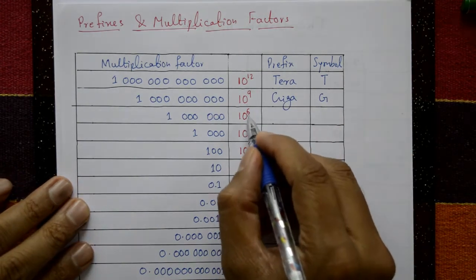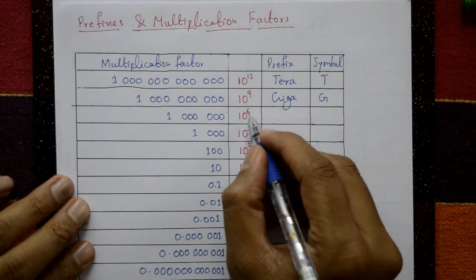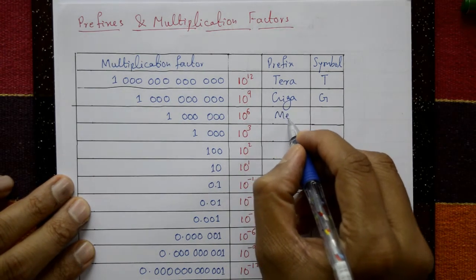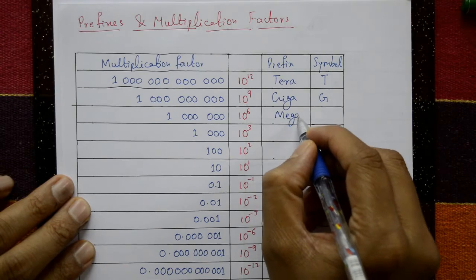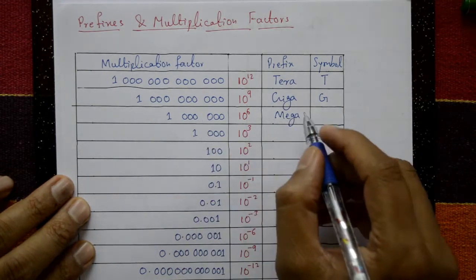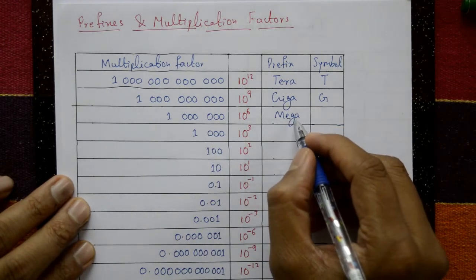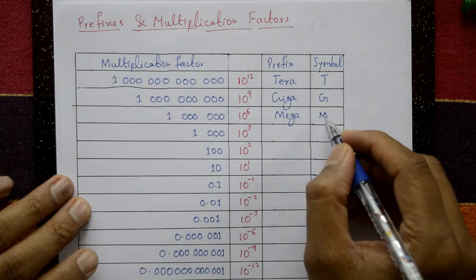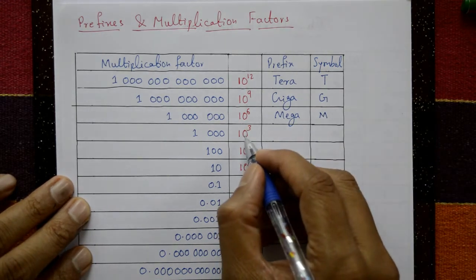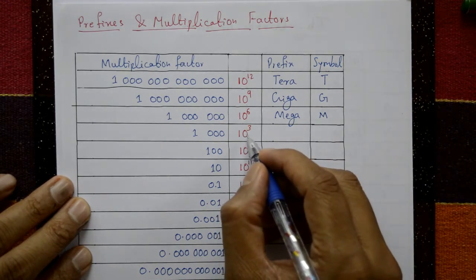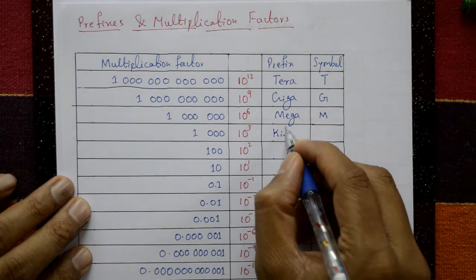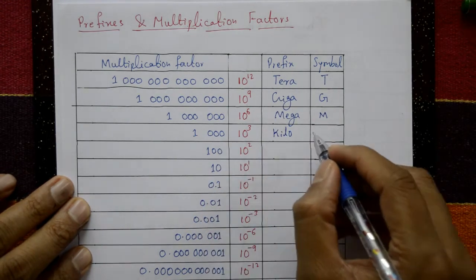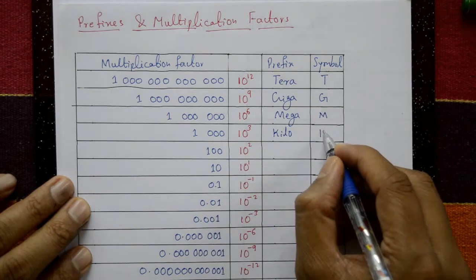10 to the power 6 is mega — six zeros — and the symbol for mega is capital M. 10 to the power 3 is kilo — three zeros — and the symbol is K.